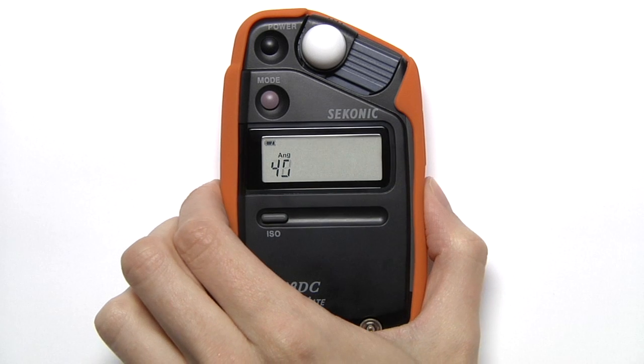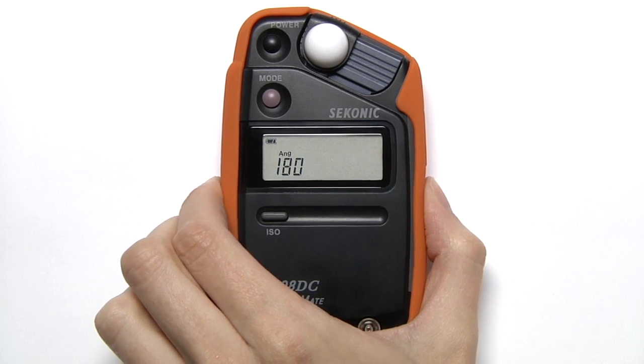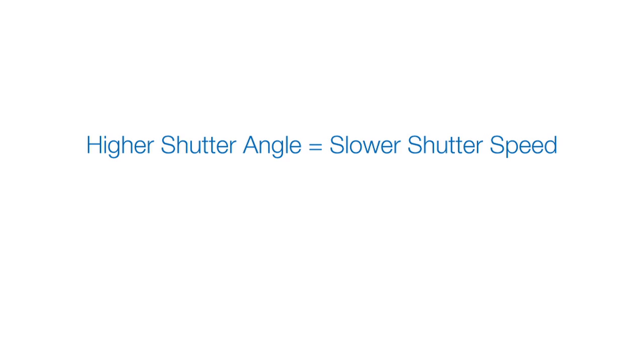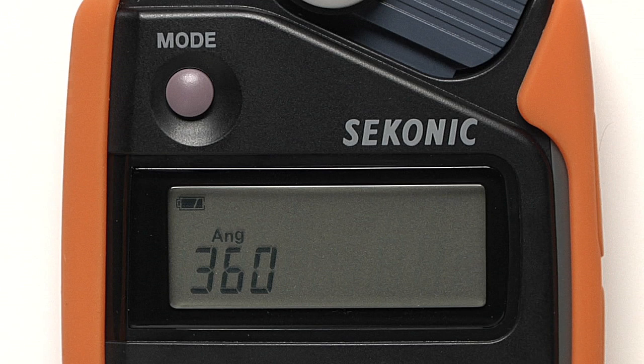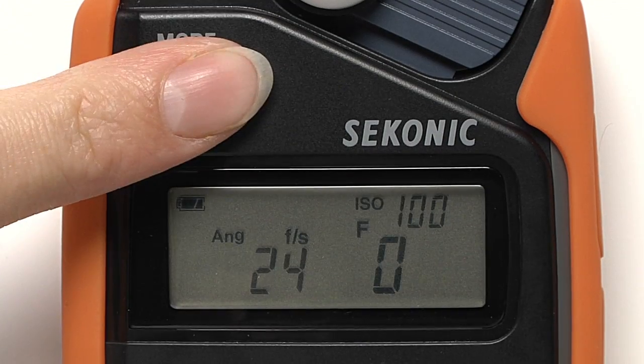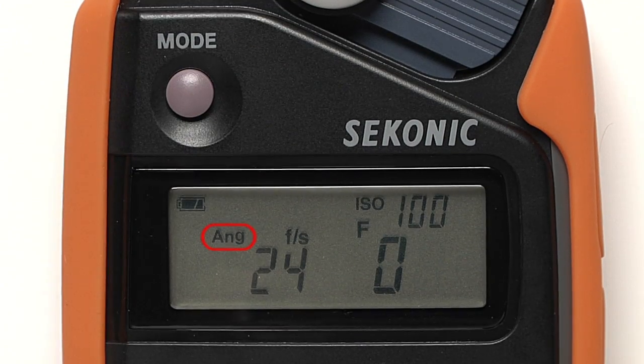ANG stands for shutter angle. Press the up or down buttons to change the value of your shutter angle. A higher shutter angle number is like using a slower shutter speed, and a lower number is like using a higher shutter speed. If a shutter angle other than 180 is selected, the ANG indication will appear on the measuring display.